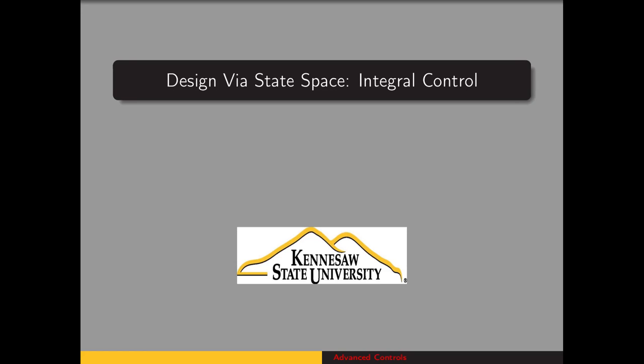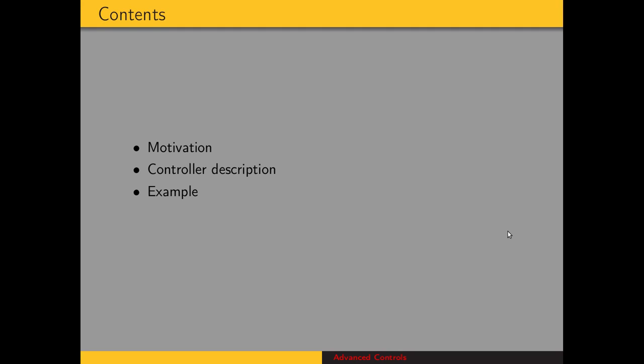The controllers we've designed up to this point have placed the poles of the closed loop system in order to achieve some desired transient response. We're going to look now at adding integral control. We'll talk about the motivation for doing so, then describe how the controller is implemented, and conclude the video with an example.